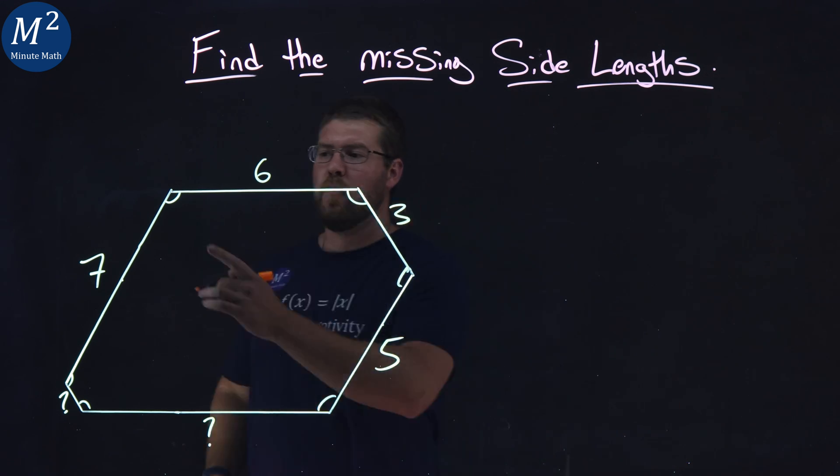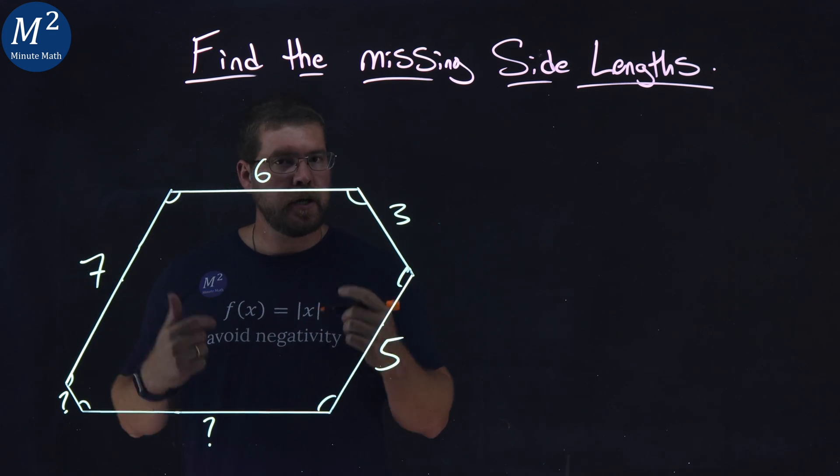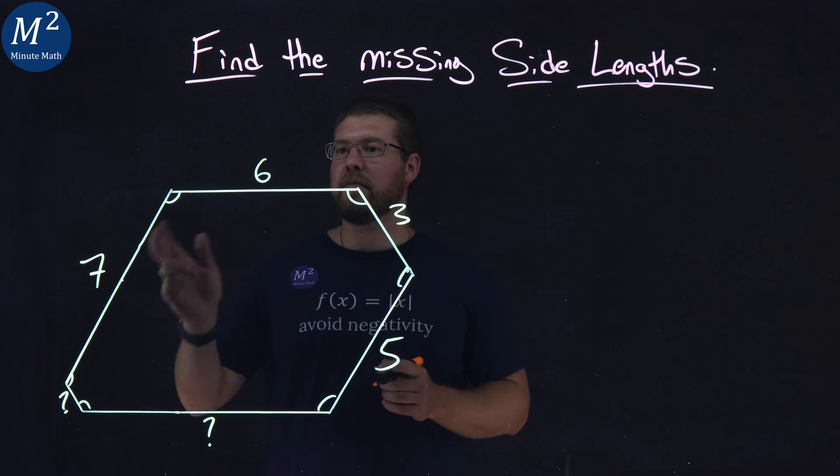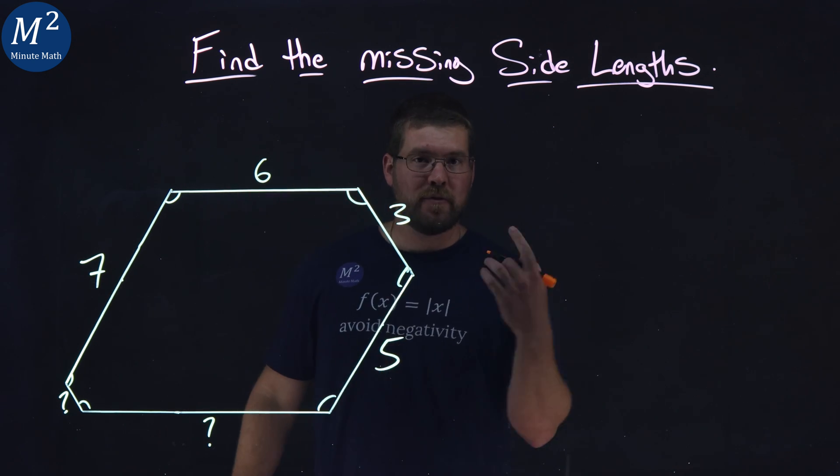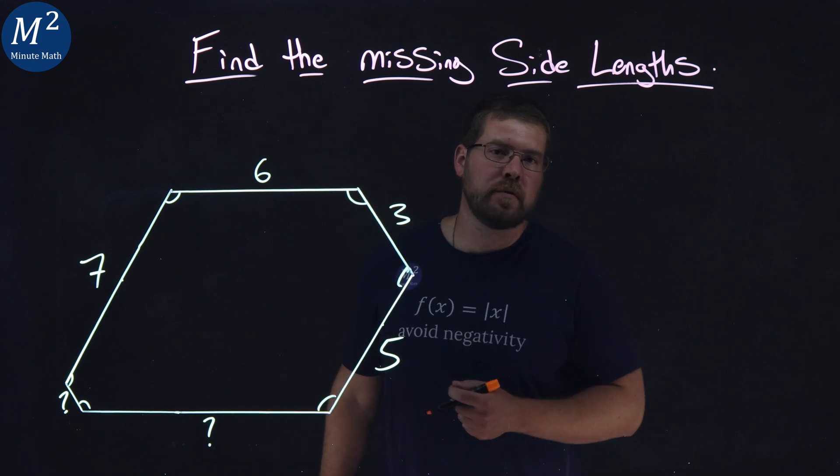And what we have here, we have a one, two, three, four, five, six-sided figure, and all interior angles are congruent. We have some side lengths, seven, six, three, and five. We have two missing side lengths right here. And we have to determine what those are.